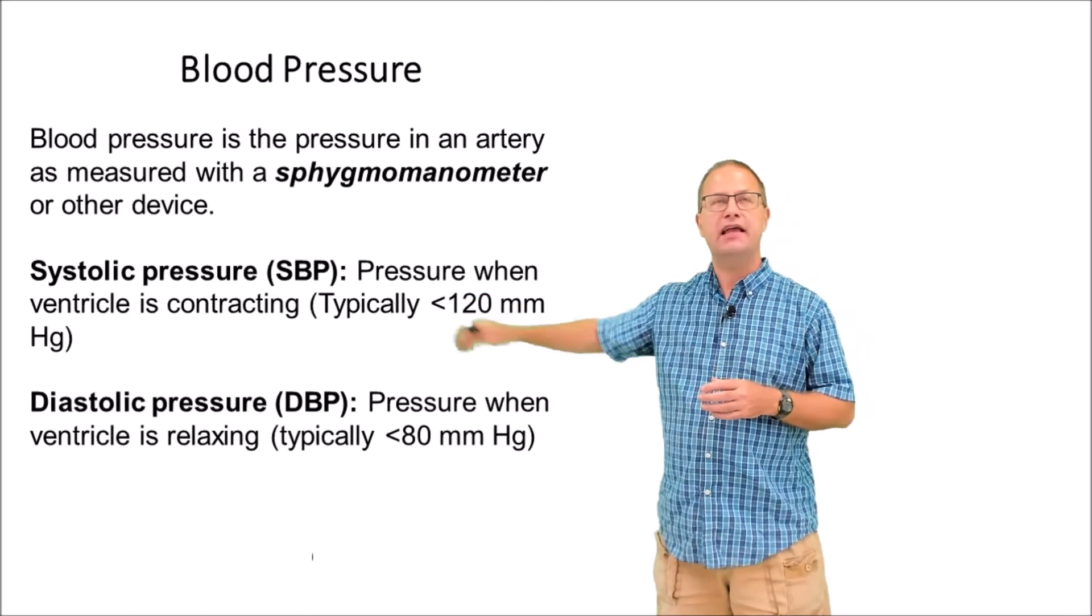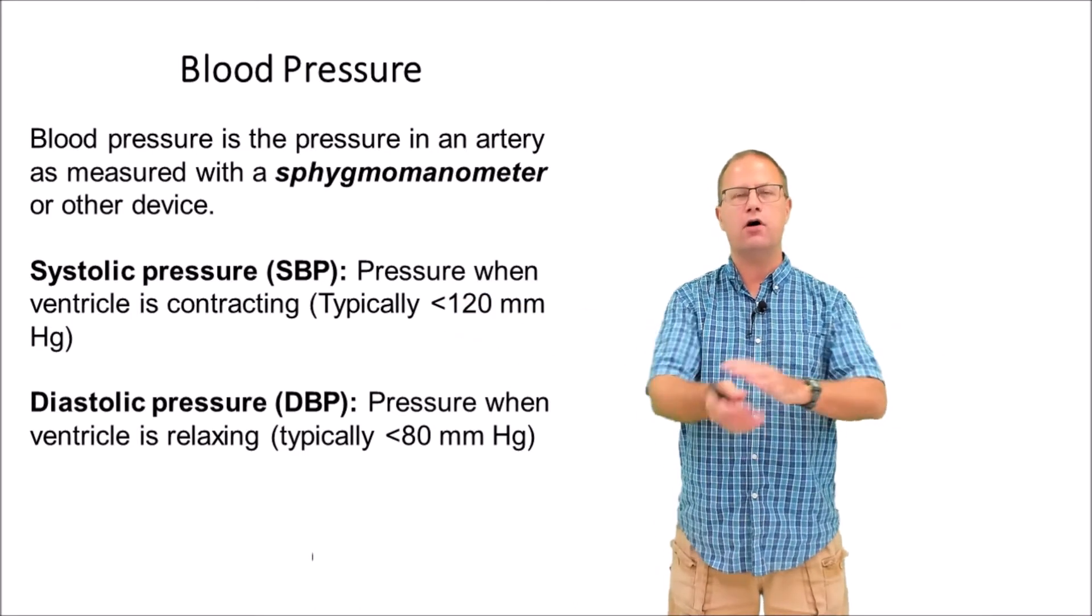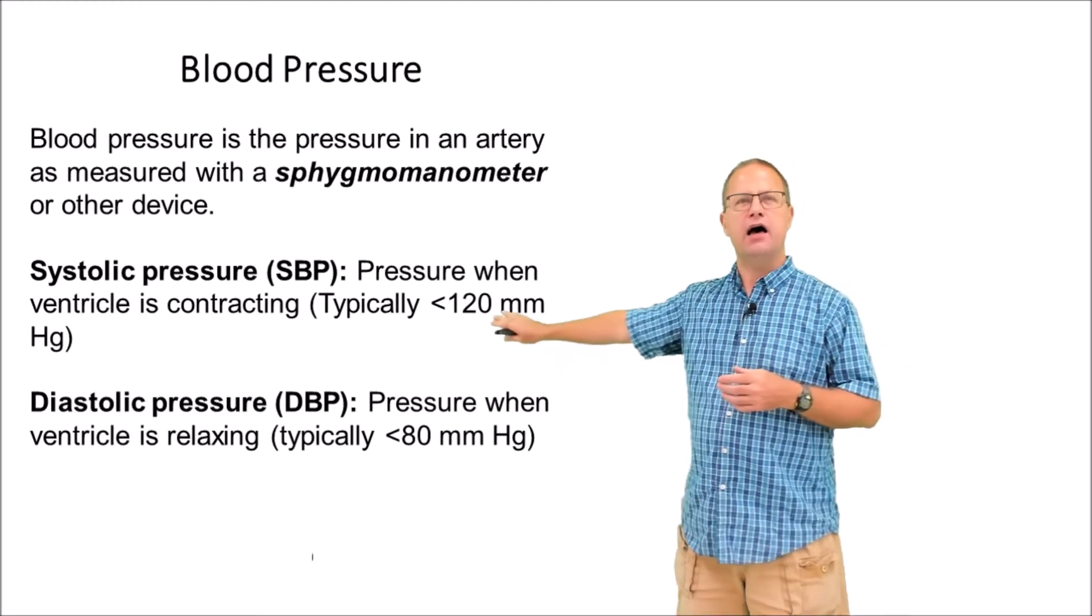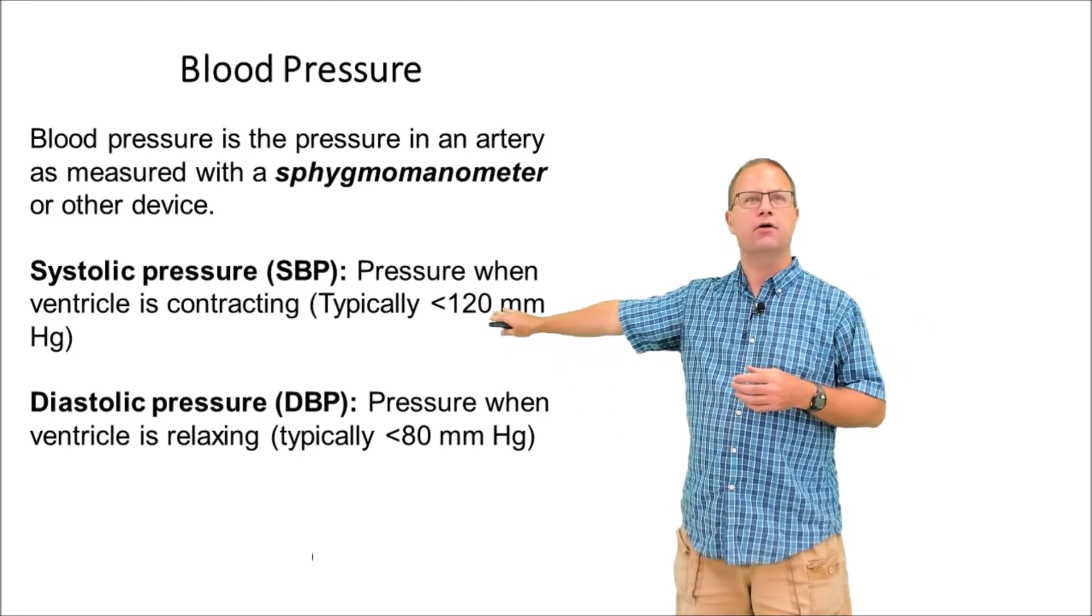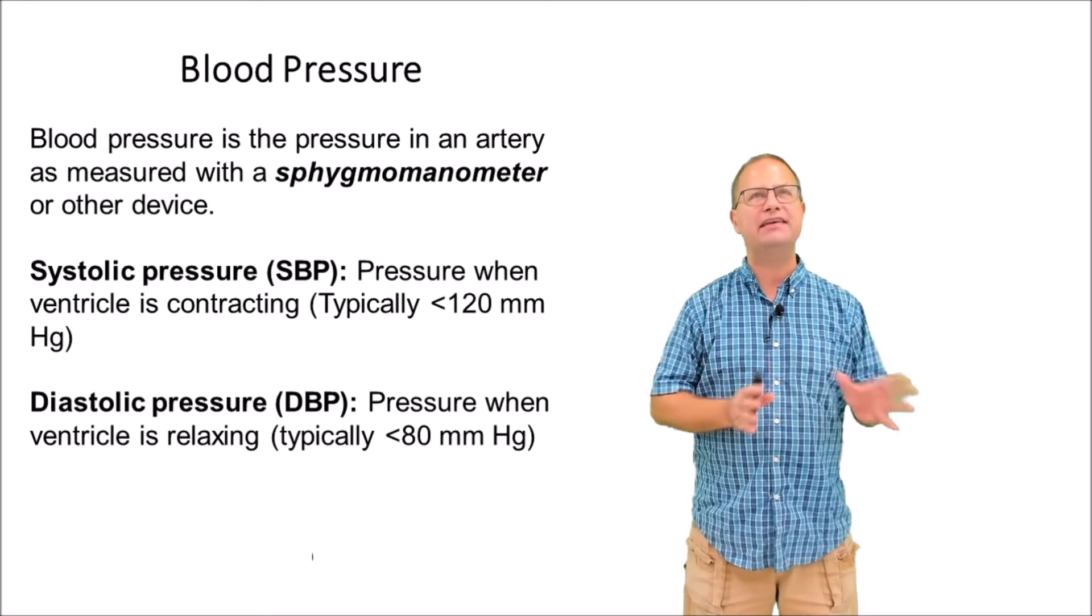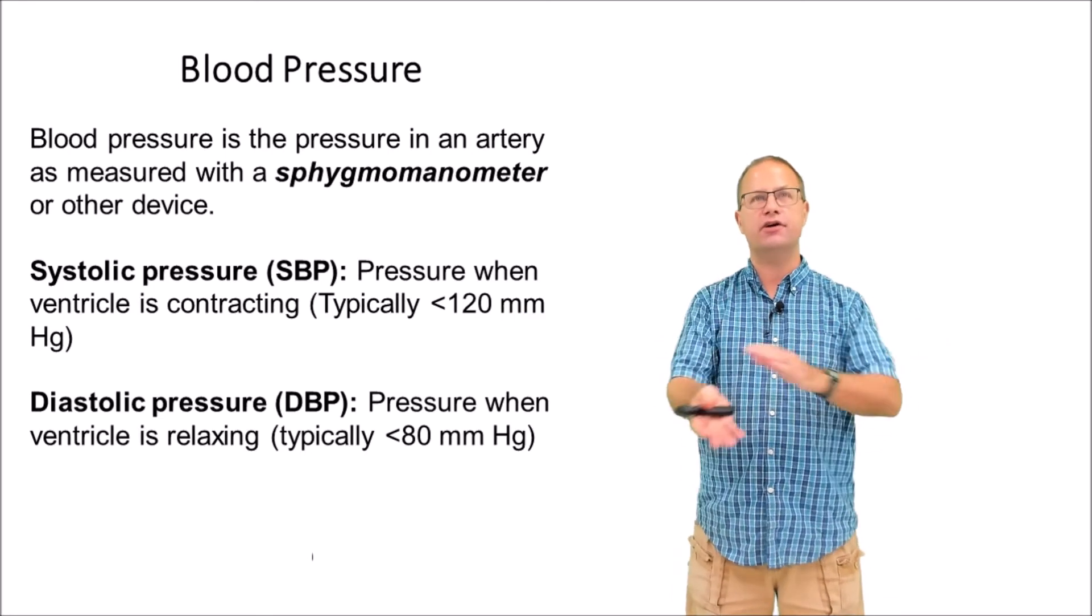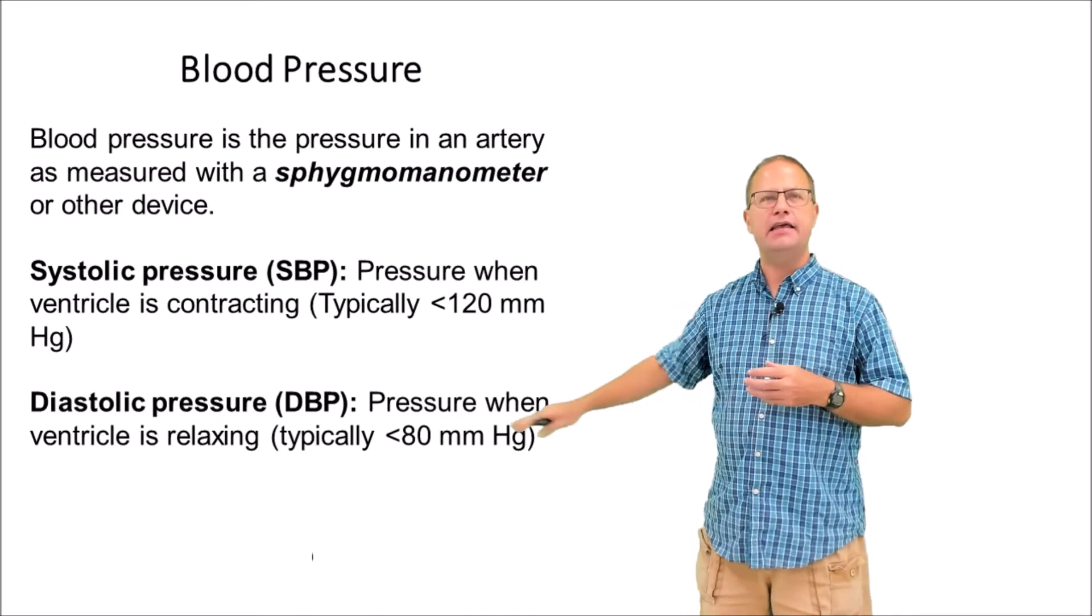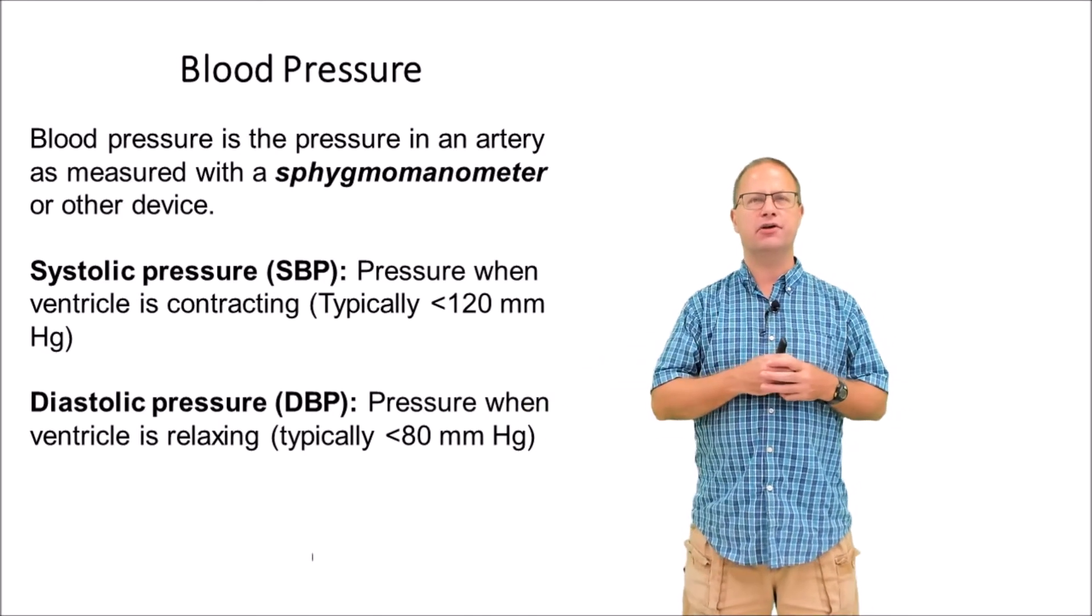Systolic blood pressure is the pressure in the peripheral arteries when the left ventricle is contracting, and typically it's around 120 millimeters of mercury or less. On the other hand, the diastolic pressure is the pressure in those peripheral arteries when the left ventricle is relaxing, and here it's usually 80 millimeters of mercury or less.